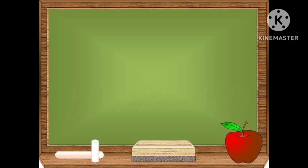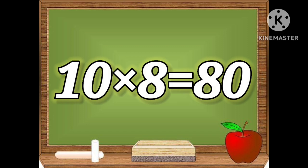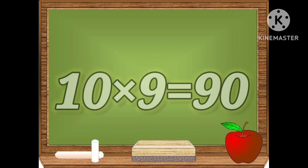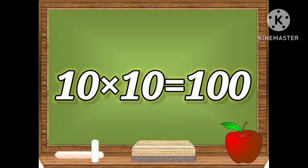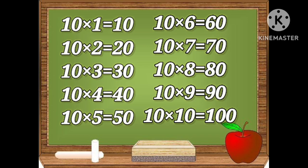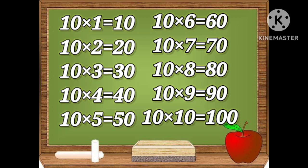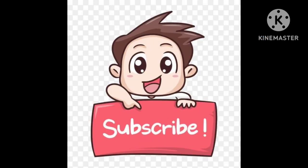Ten eights are eighty. Ten nines are ninety. Ten tens are one hundred. Let's repeat the table. Ten ones are ten, ten twos are twenty, ten threes are thirty, ten fours are forty, ten fives are fifty, ten sixes are sixty, ten sevens are seventy, ten eights are eighty, ten nines are ninety, ten tens are one hundred.